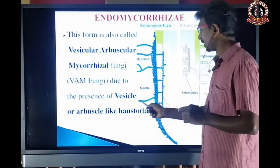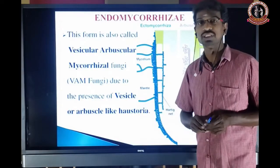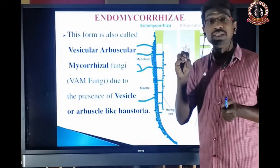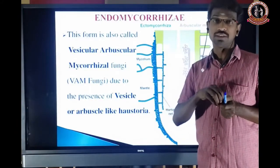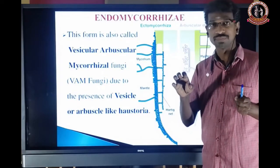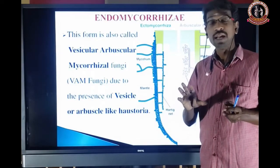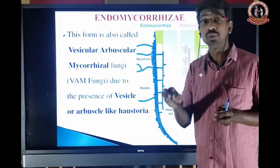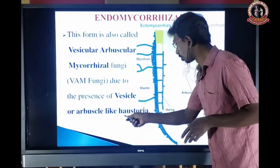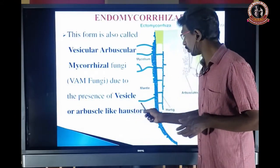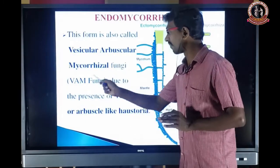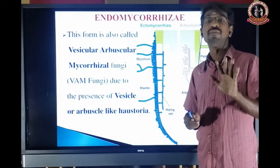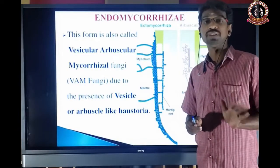Both vesicle and arbuscule are present inside the haustoria. The haustoria is a filamentous fungal body specially modified to absorb nourishment from the root. So endomycorrhizal is generally called VAM fungi, and VAM fungi is a best example of endomycorrhizal.